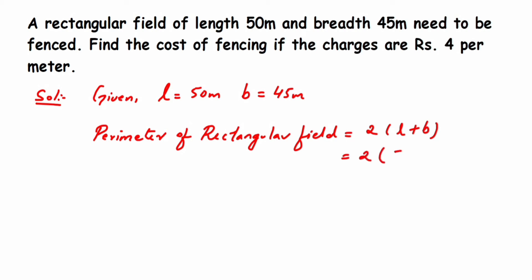2 into (length is 50 meters plus breadth is 45 meters). Add them: 50 and 45 will get 95. So 2 into 95 meters, when you multiply, we'll get 190 meters. Now they're asking us to find out the charge.